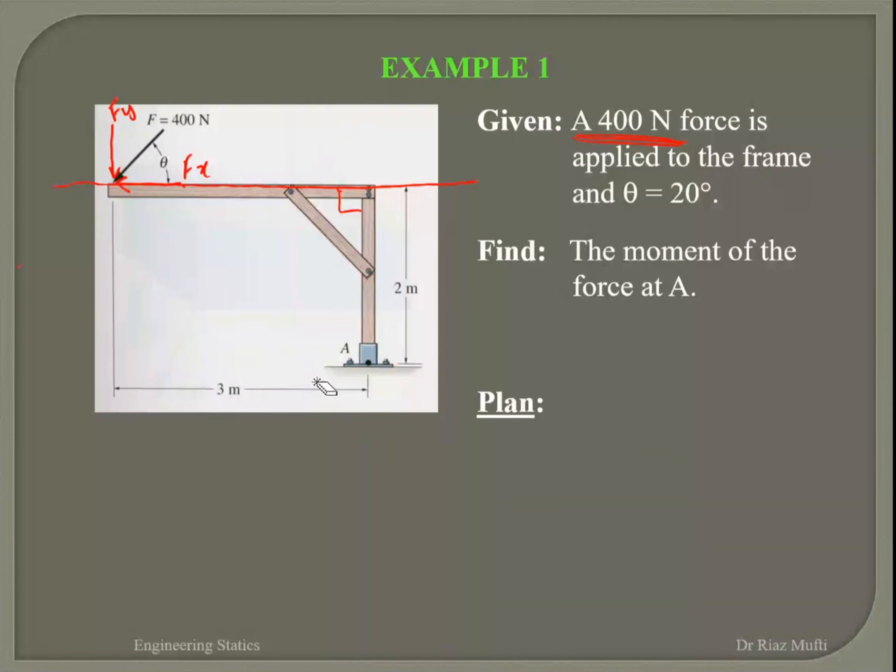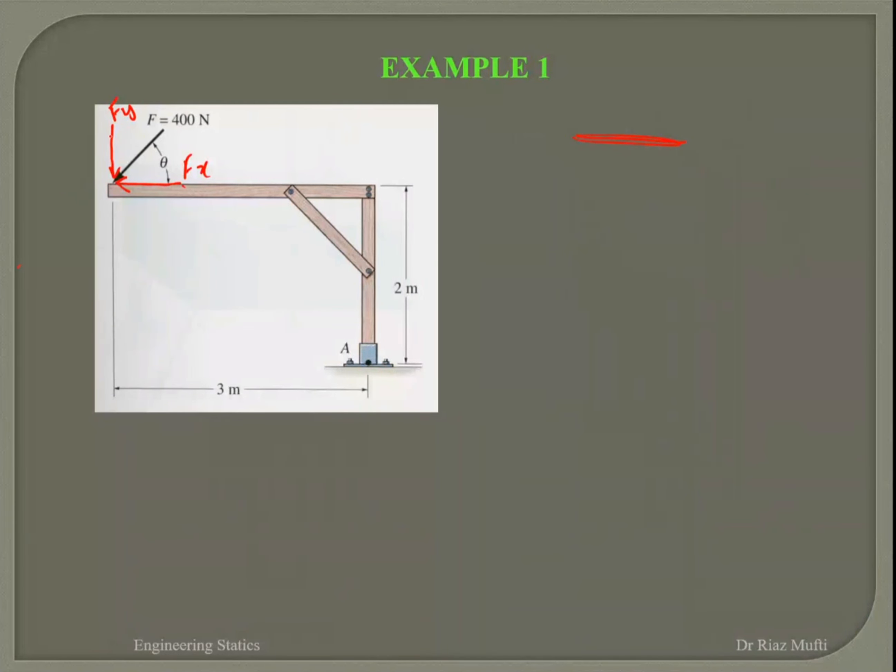Then we look at FY. That is my force line for FY and its perpendicular distance from here. So FY multiplied by three and the tendency to rotate the FY is trying to rotate in this direction that is counterclockwise. So let's now look at the solution here.